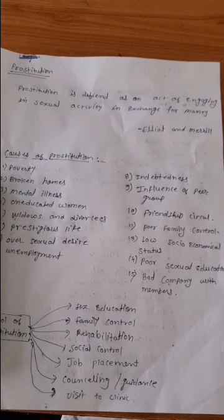Next is family control — by doing family control, prostitution can be reduced. Next is rehabilitation — due to rehabilitation, some cases may be brought under control. Next is social control.